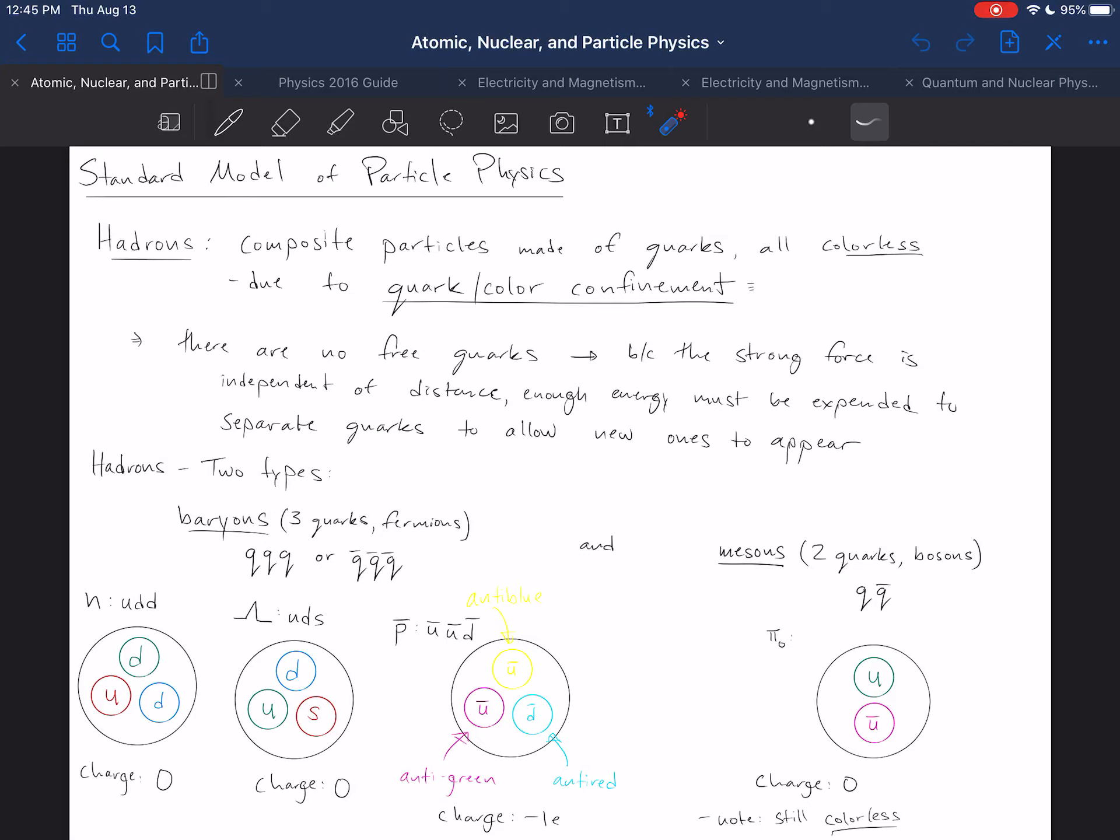But the strong force or the strong interaction that actually binds quarks together is independent of distance. So what happens is when you try to pull two quarks apart, or when you try to pull one of these quarks out of the composite hadron that it's in, then you have to expend energy to do so. And eventually you expend enough energy, if you pull it far enough or hard enough, which is not very far, that that energy manifests as separate quarks.